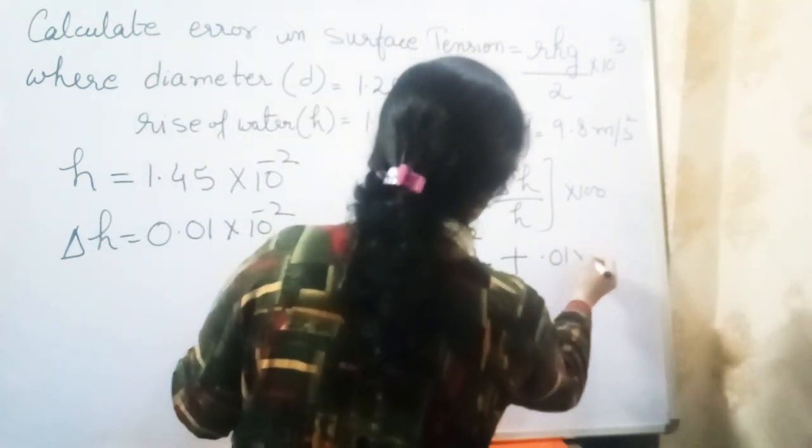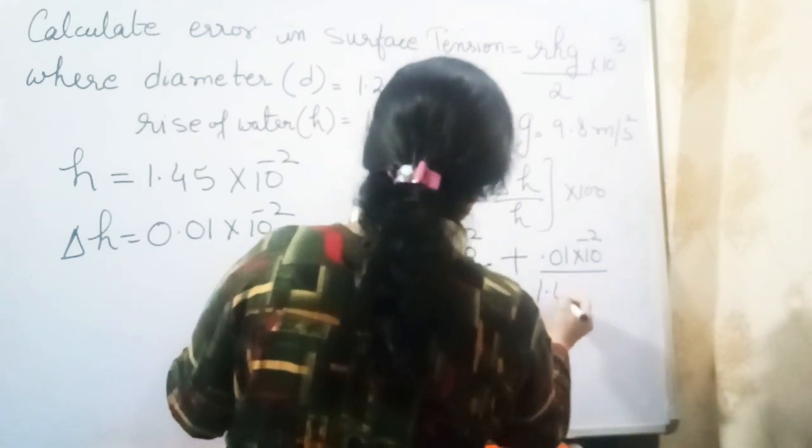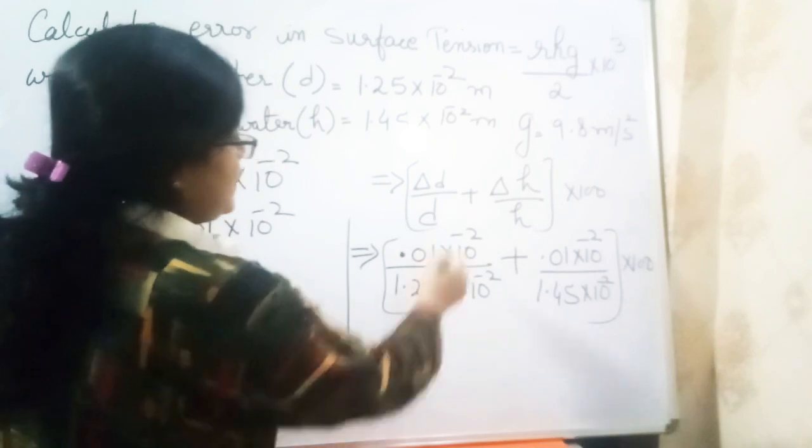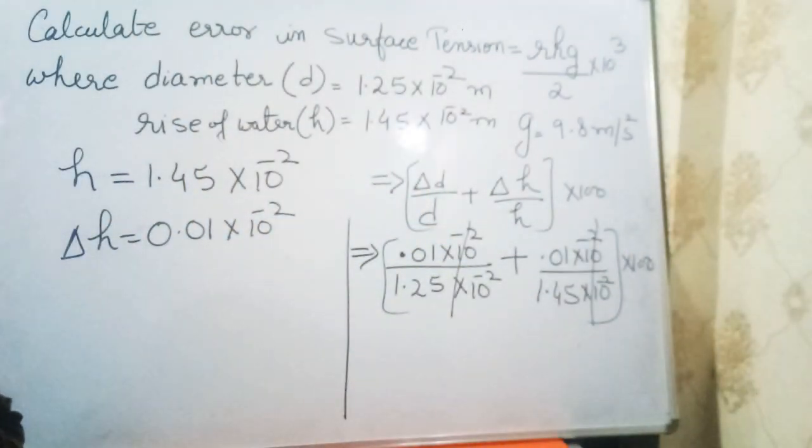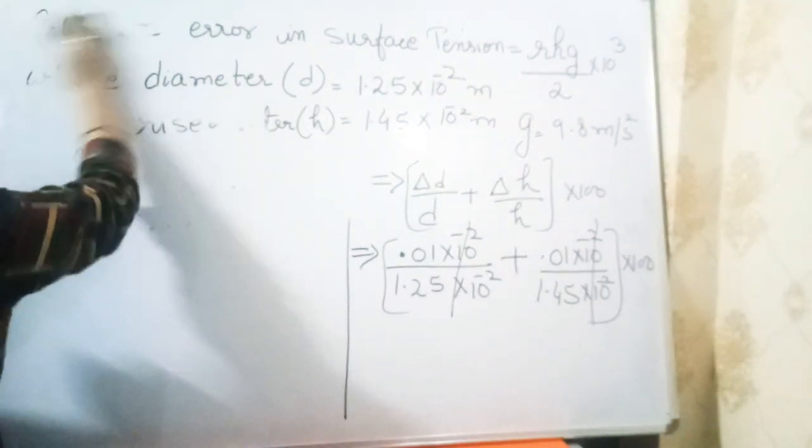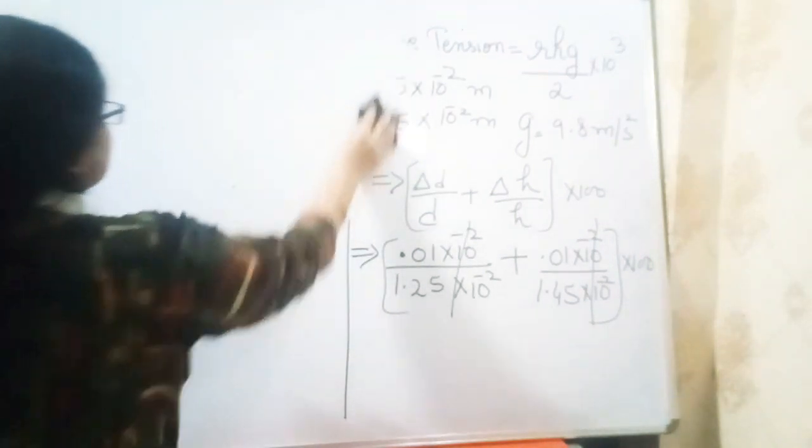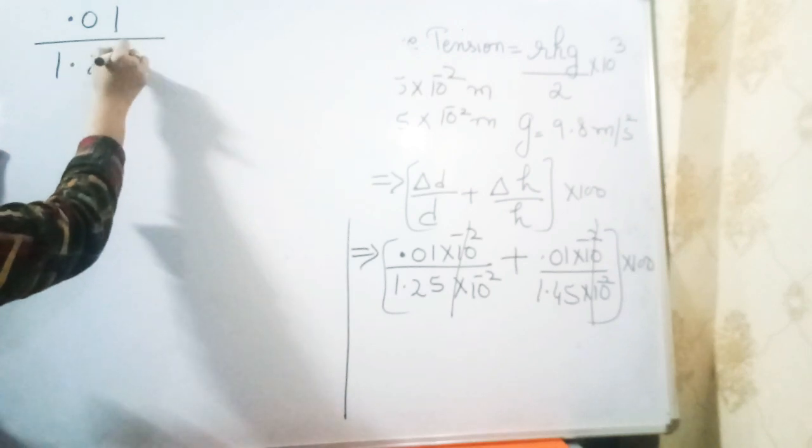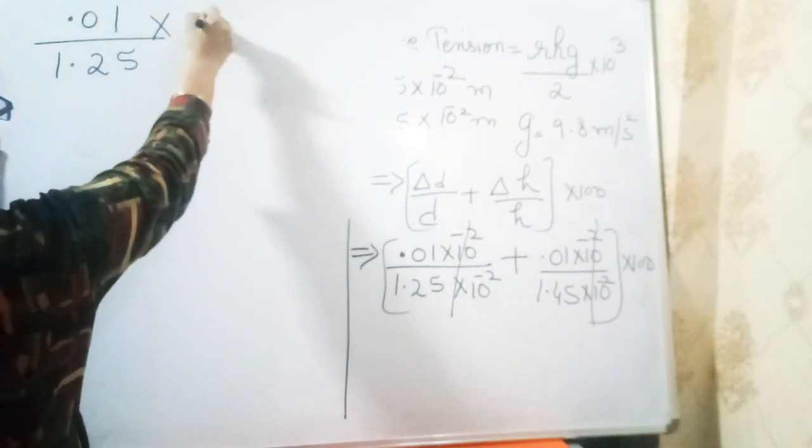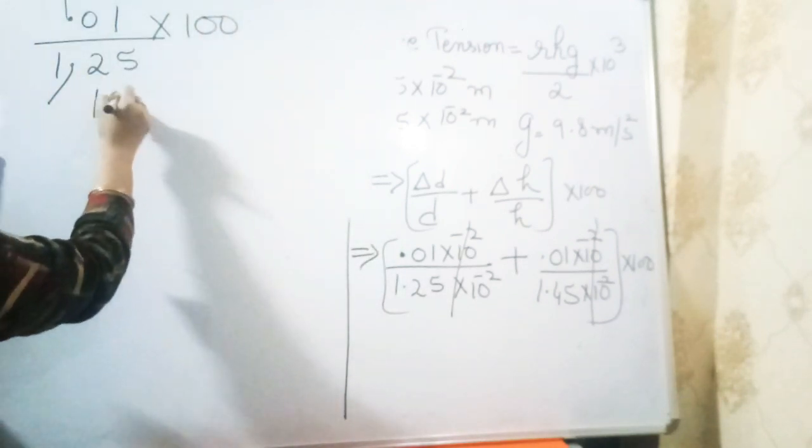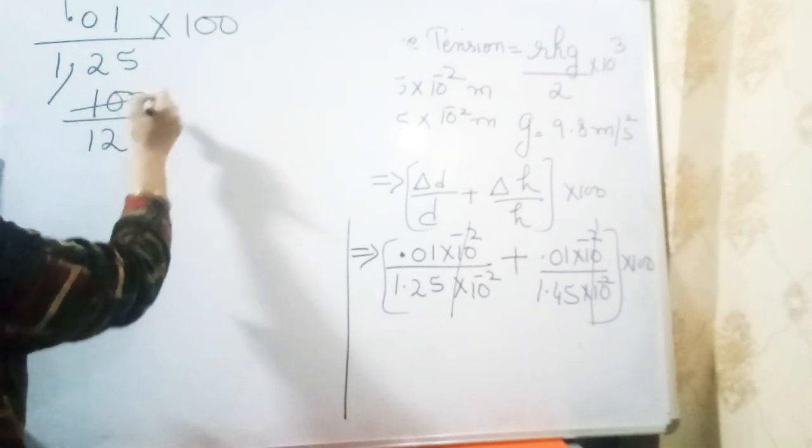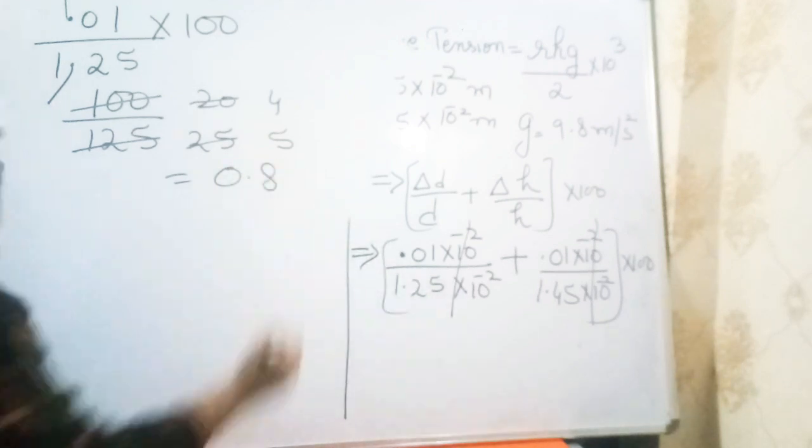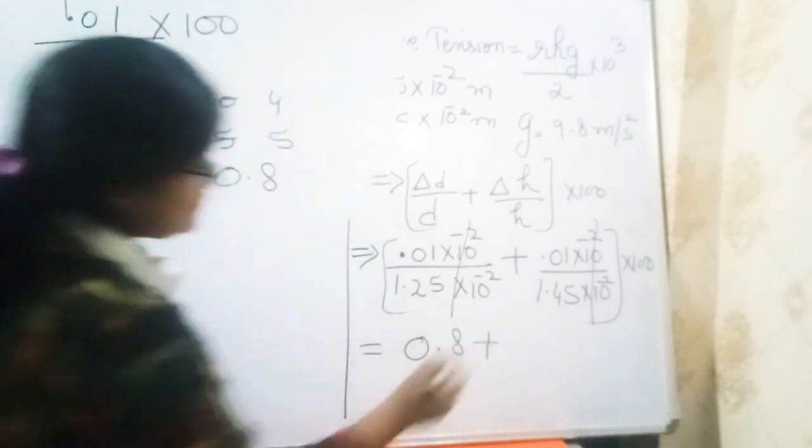Now write the values: 0.01 times 10 to the power minus 2 over 1.25 times 10 to the power minus 2, plus 0.01 times 10 to the power minus 2 over 1.45 times 10 to the power minus 2, multiplied by 100. These get cancelled. We have 100 over 125, cut it down with 5 to get 4 over 5, which is 0.8.